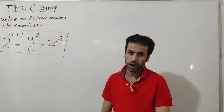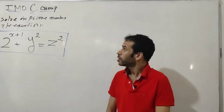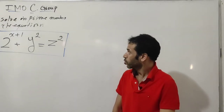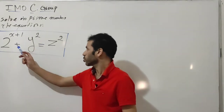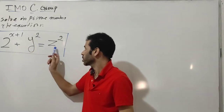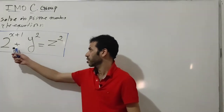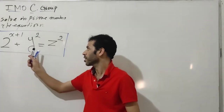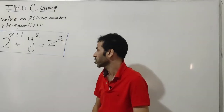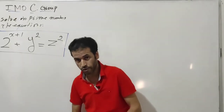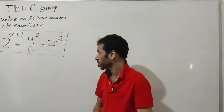In this video I would like to introduce a very nice problem from the International Mathematical Olympiad. Solve in prime numbers the following equation: 2^(x+1) + y² = z². The left-hand side involves a power of two plus a square, and the right-hand side is a perfect square. To solve this equation, you are going to check the parity of these variables.